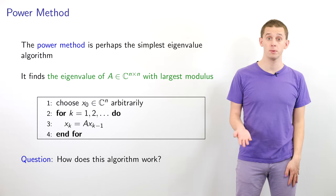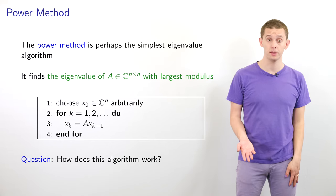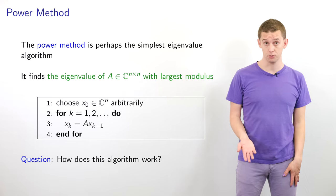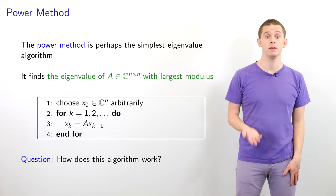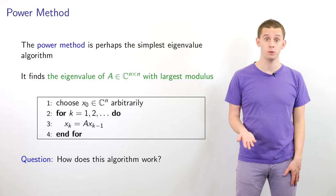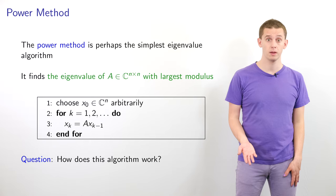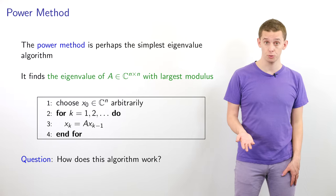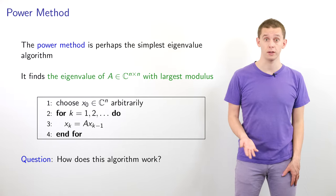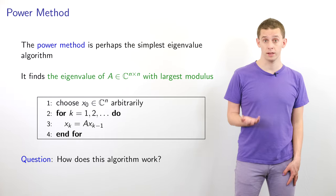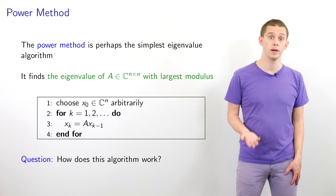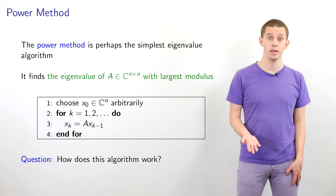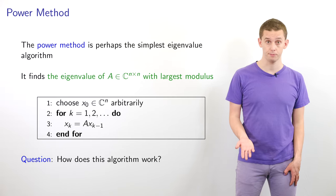The power method is perhaps the simplest eigenvalue algorithm, and for an n-by-n complex matrix A, it computes the eigenvalue with largest modulus. In the power method, we first choose an arbitrary complex vector x0, and we then iterate, computing each x_k in terms of A multiplied by x_{k-1}.